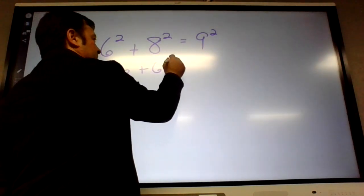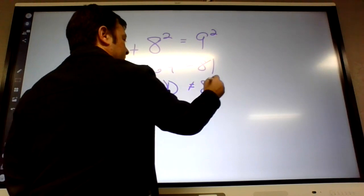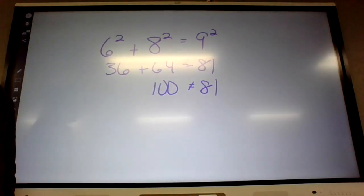Actually, six, eight, and ten, so it's a hundred, that's not equal to 81. Six, eight, ten make a right triangle, not six, eight, nine. So that's acute.